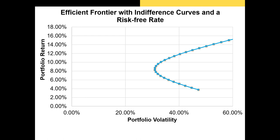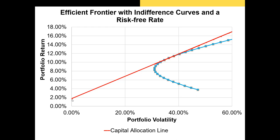Now let's go through the modern portfolio theory from start to finish. In the security selection step — the first step — we identify all possible portfolio combinations by adjusting the weights to each of our risky securities. That's how we build the minimum variance frontier, and the top part from the minimum variance portfolio is called the efficient frontier. The next step is to identify our risk-free asset and draw our capital allocation line, which will touch the efficient frontier at exactly the optimal portfolio weight — the tangency portfolio.